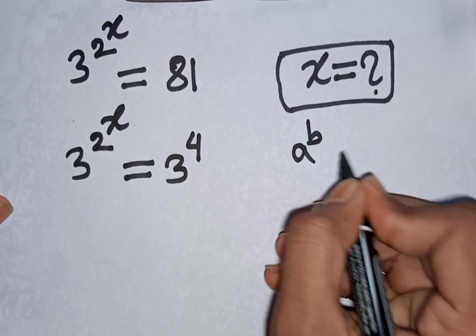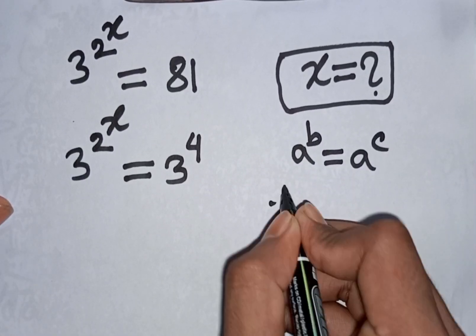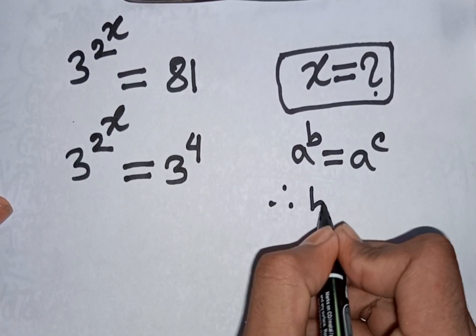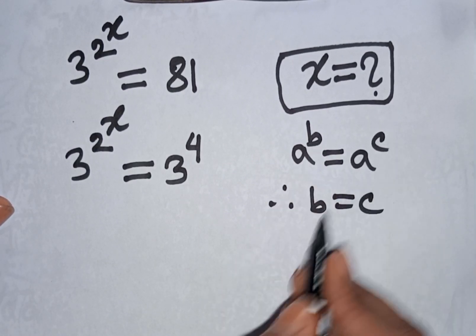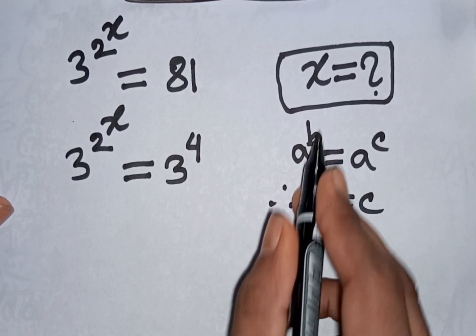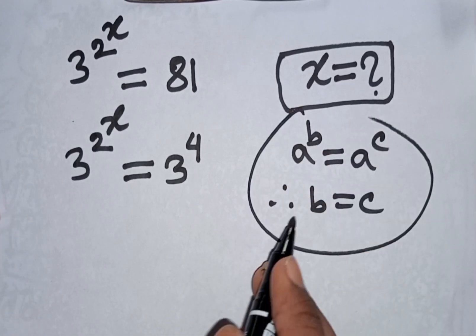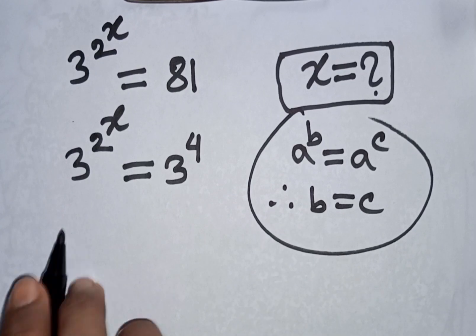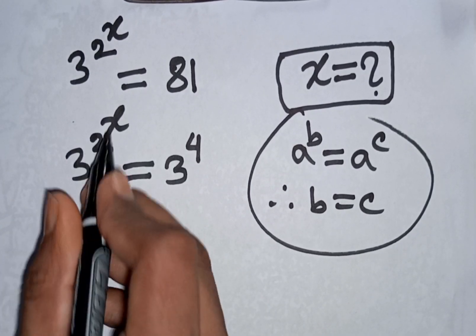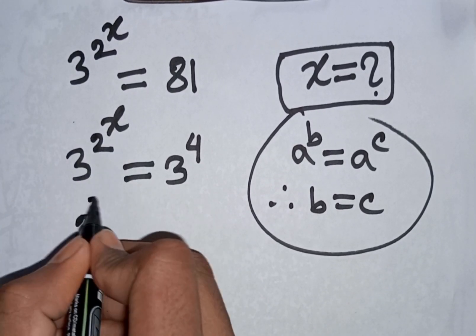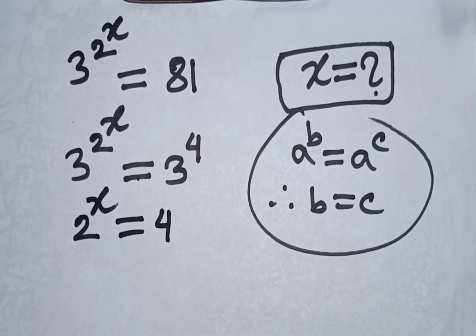Now here we can apply the exponential rule: if a power b is equal to a power c, then since the base a is the same, b is equal to c. Applying this rule here, since we have the same base 3 on both sides, 2 power x will be equal to 4.